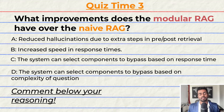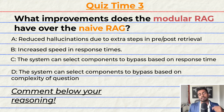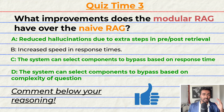Quiz time — what improvements does Modular RAG have over Naive RAG? A: Reduced hallucinations due to extra steps of pre and post retrieval. B: Increased speed and response times. C: The system can select which components to bypass based on response time. Or D: The system can select components to bypass based on complexity of the question. Note that multiple options may be correct. The correct answers are A, C, and D. But can you tell me why? Give your reasoning in the comments below and let's have a discussion. Please consider giving this video a like because it will help me out a lot.